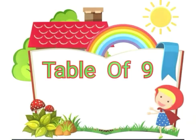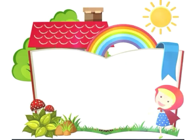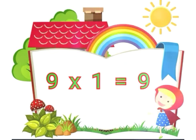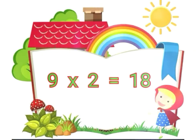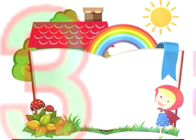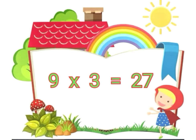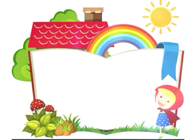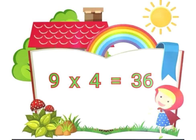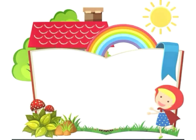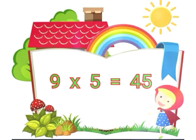Table of 9. 9 1's are 9. 9 2's are 80. 9 3's are 27. 9 4's are 36. 9 5's are 45.